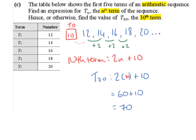I'm going to write out the list of numbers: 12, 14, 16, 18, 20. The difference between each term is plus 2. I'm going to go back by 2 to find what would be the zero term. If 12 is the first term, going back by 2 gives the zero term: 12 minus 2 is 10. So our nth term is 2n plus 10.